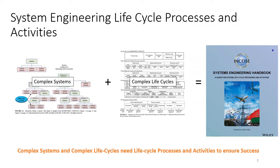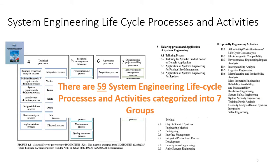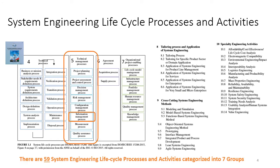System engineering is a complex process of building complex systems in a complex life cycle. The System Engineering Handbook provides guidance on how to do that. It identifies 59 life cycle processes and activities categorized into seven groups to provide a structured, systematic approach to the design, deployment, and operation of systems. This video is about the information management process, in the category of technical management processes.